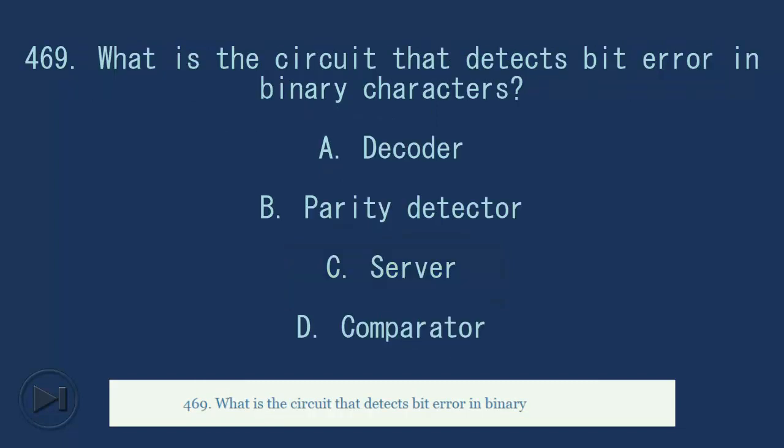469. What is the circuit that detects bit error in binary characters? A. Decoder. B. Parity detector. C. Server. D. Comparator. Answer, B. Parity detector.